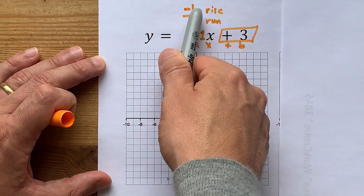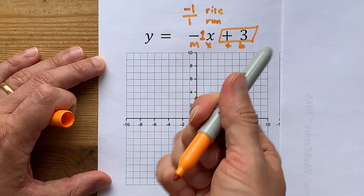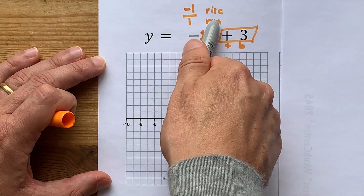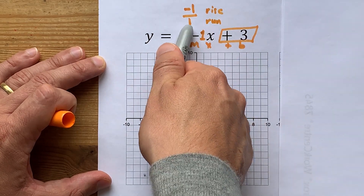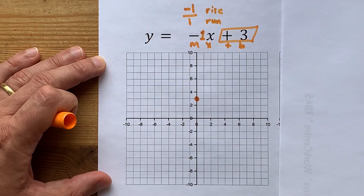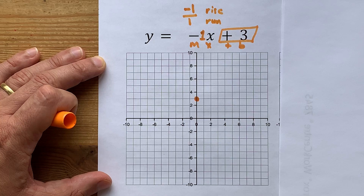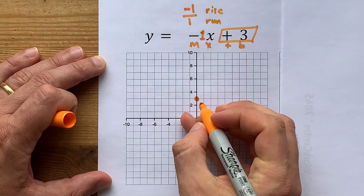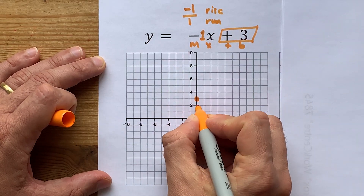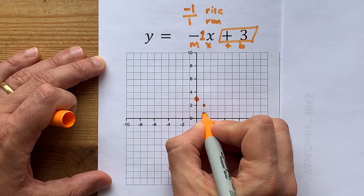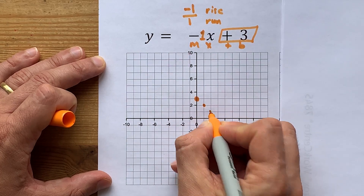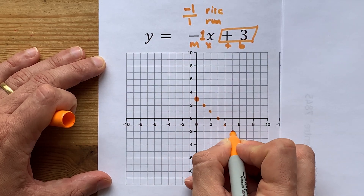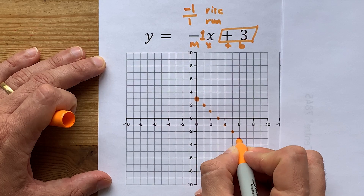You're going to rise negative 1, which means going down, and run by 1, which means going to the right by 1. So from this point, go down 1, right 1 — down 1, right 1 — and keep repeating that pattern over and over.